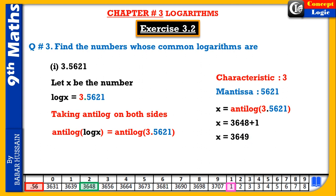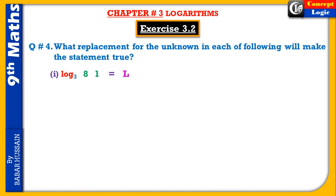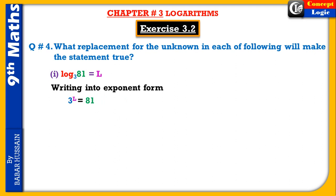Question number four: what replacement for the unknown will make the statement true? Unknown find کرنا ہے۔ Write in exponent form — log کی base وہی رہتی ہے، دوسری طرف کا number exponent بن جاتا ہے، اور log دوسری طرف shift ہو جاتا ہے۔ اس طرح: 3^l = 81۔